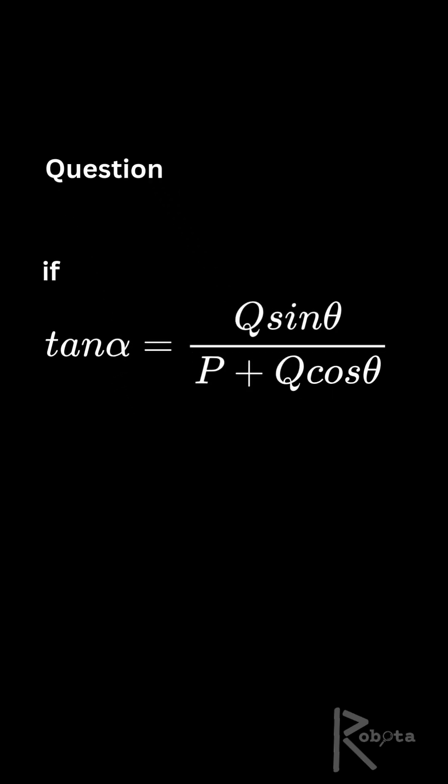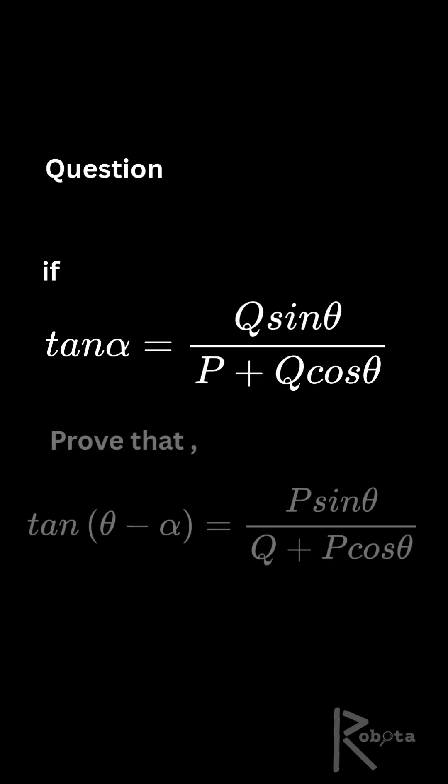Here is the question. If tan alpha equals q times sine theta over p plus q times cos theta, prove that tan of theta minus alpha equals p times sine theta over q plus p times cos theta.